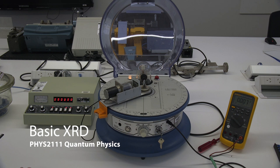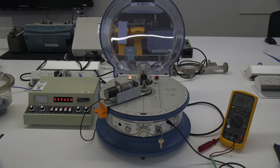This is a video for the basic XRD experiment which is part of the quantum physics course. In this experiment you're going to diffract x-rays through a crystal and measure the intensity of those diffracted x-rays as a function of the detector angle, and this will allow you to work out the interatomic spacing of the atoms in that crystal.